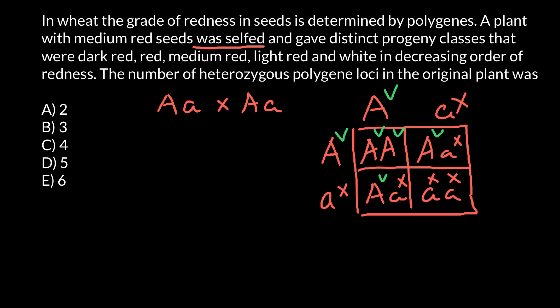With only one gene, we can get one, two, three different distinctive groups that have different intensity of color depending on the number of normal and defective alleles. But as you see, a one-gene hypothesis gives us only three distinctive groups. And we are looking at — let's count how many groups we observe in the problem.